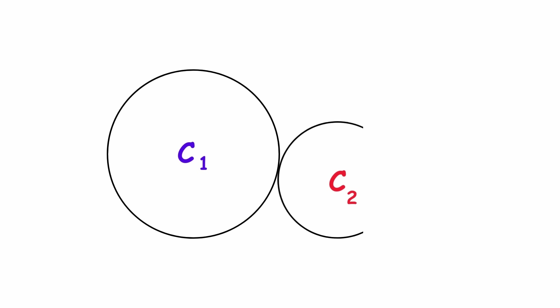Anyway, draw a second circle, C2, that touches C1 at just one point. We see that these circles are tangent to each other.